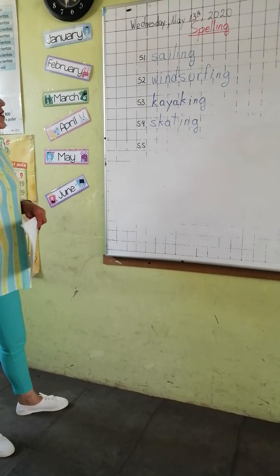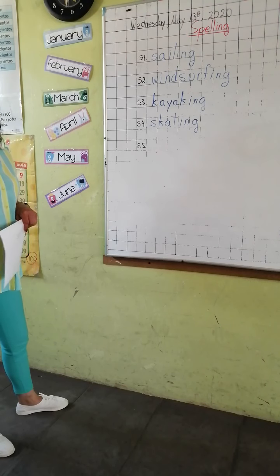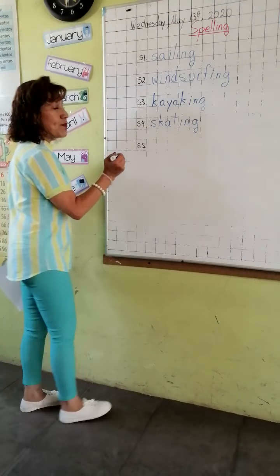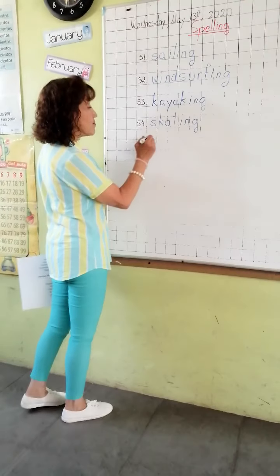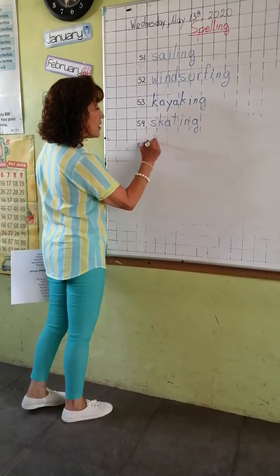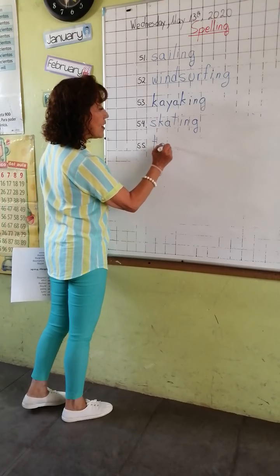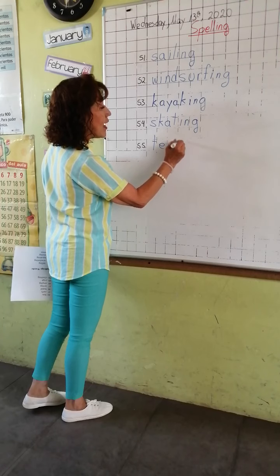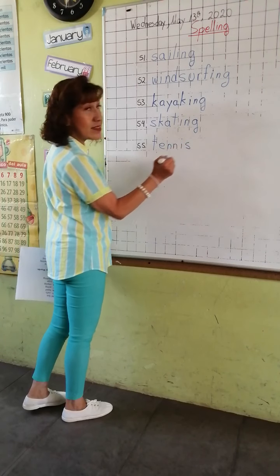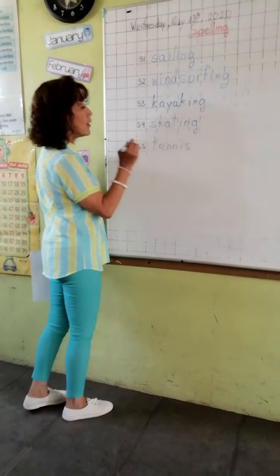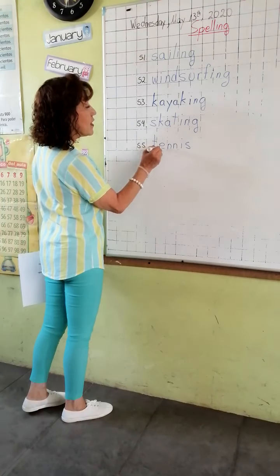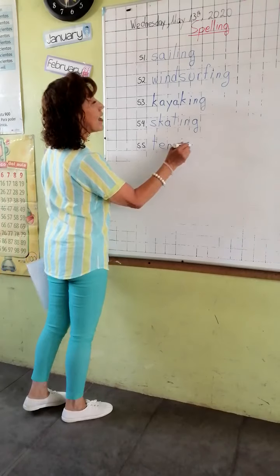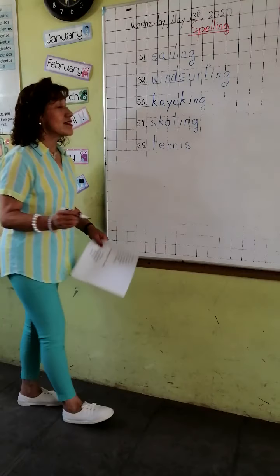And the last word of today is tennis. Let's try it: T, E, double N, I, S — or T, E, N, N, I, S. Tennis.